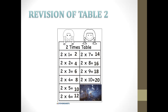We will revise this at home many many times. Two times one equals two, two times two equals four, two times three equals six, two times four equals eight, two times five equals ten, two times six equals twelve, two times seven equals fourteen, two times eight equals sixteen, two times nine equals eighteen, two times ten equals twenty.